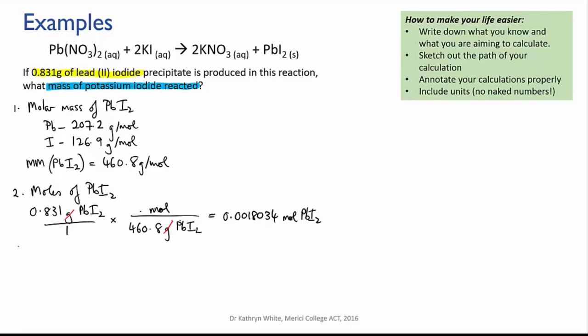Okay now we know the moles of lead iodide we can use the mole ratio from the equation to work out how many moles of potassium iodide must have reacted. You can see that the ratio is one lead iodide to two potassium iodides.